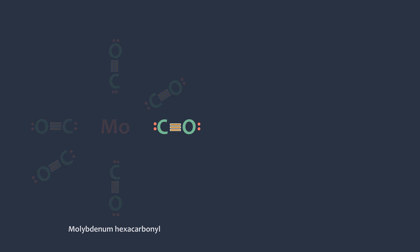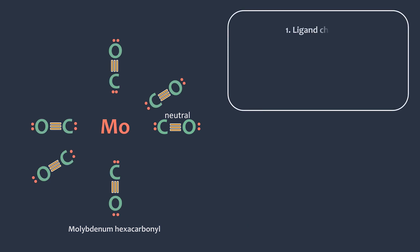Now, we need to find the charge of the ligand. Here, the formal charge of carbon and oxygen is 1 and negative 1. This makes the charge of the carbonyl ligand zero. Therefore, the total ligand charge is zero.